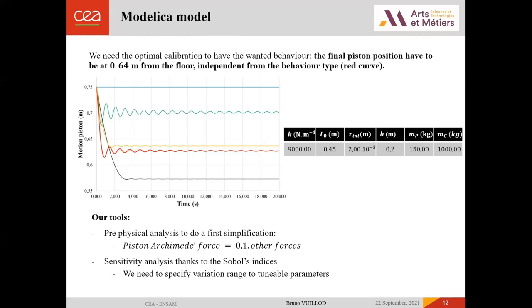Our tools to find the optimal calibration are these. We can do pre-physical analysis to do a first simplification. For example, we observed that the piston Archimedean forces was 10 times lower than the other ones. So we decided to delete this elementary block. And we can use also a sensitivity analysis to find our main parameters.